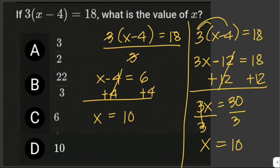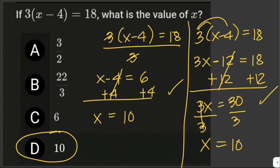The other way is to distribute: 3 times (x minus 4) expands to 3x minus 12 equals 18. Add 12 to both sides to get 3x equals 30, then divide both sides by 3 to get x equals 10. The answer is letter D. Whichever method is more convenient, you will still get the same answer.